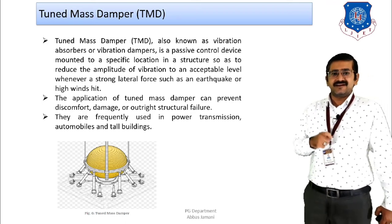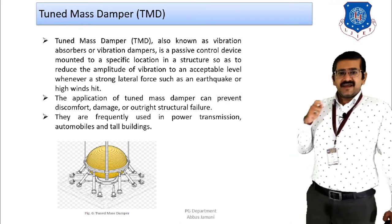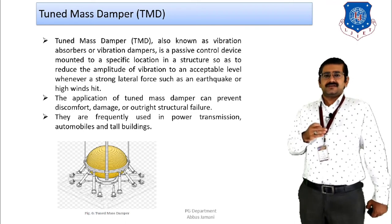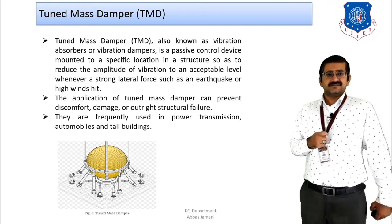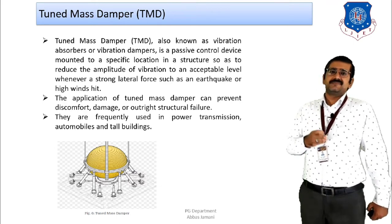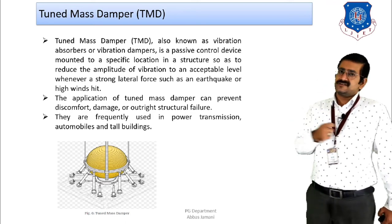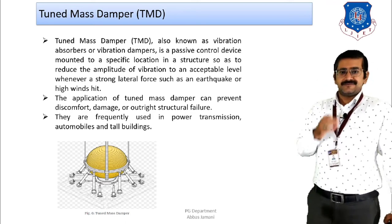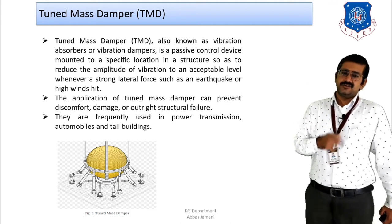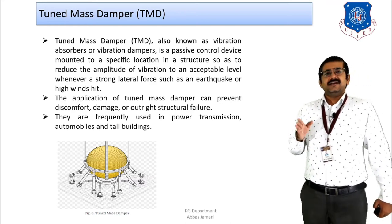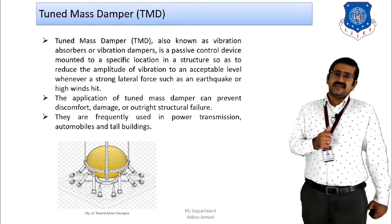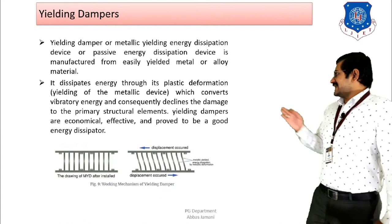Tuned mass dampers can prevent discomfort, damage, and outright structural failure. A real-world example is the government hospital in Bhuj, where a tuned mass damper installed in the basement after the Bhuj earthquake is still present today. They are frequently used in power transmission, automobiles, tall buildings, and public or institutional buildings where protection of human life and property is a key priority.